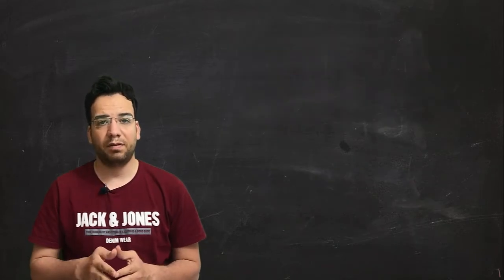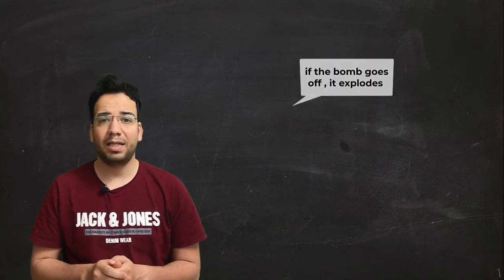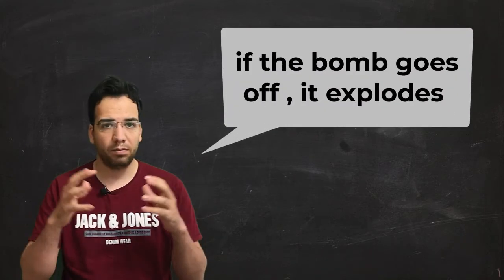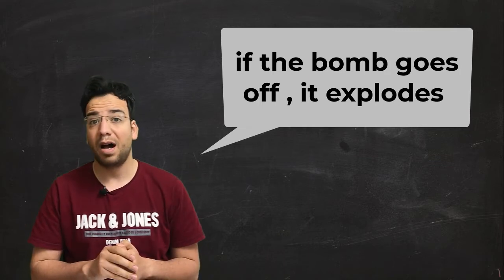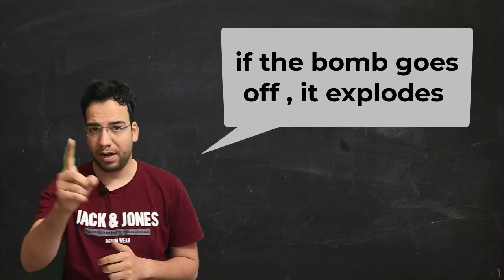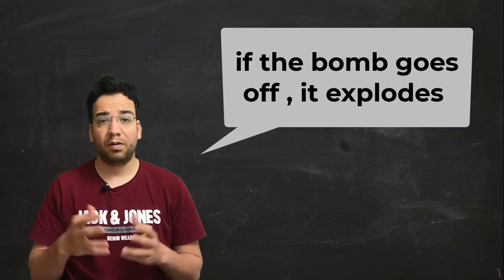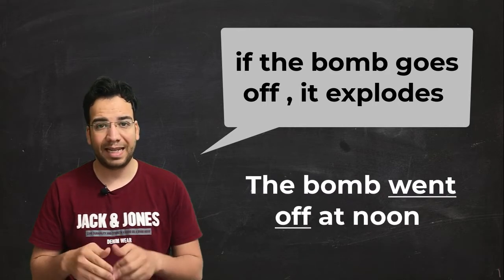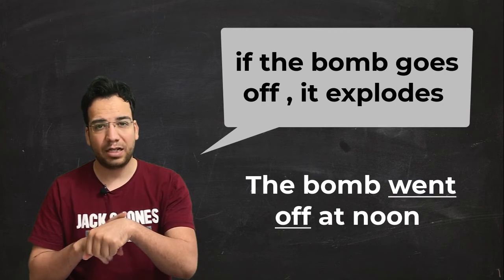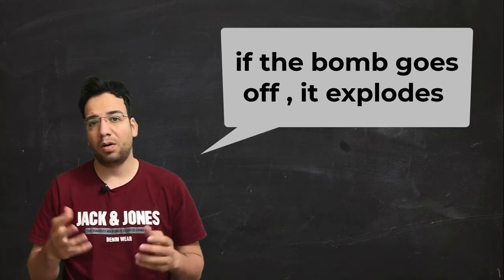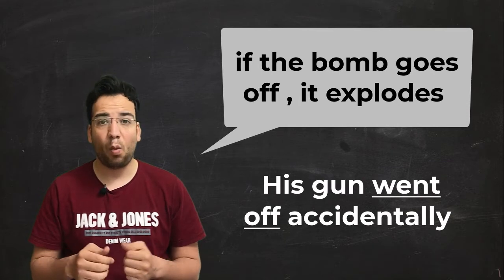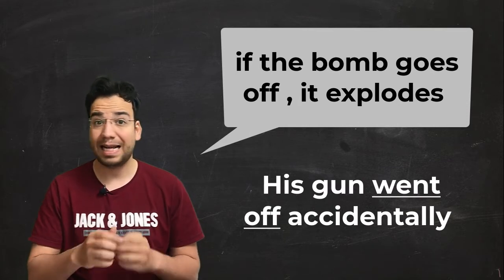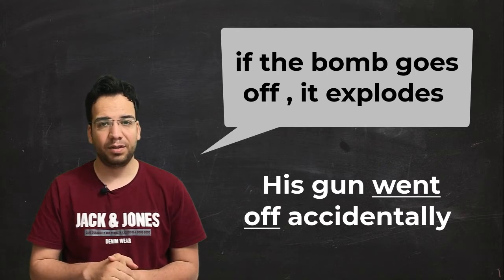The second meaning of the phrasal verb go off: if the bomb goes off it explodes, boom, or if the gun goes off it fires. For example, the bomb went off at noon, which means it exploded at noon, at 12 o'clock. Or we can say his gun went off accidentally, which means his gun fired accidentally, which is a very dangerous activity.